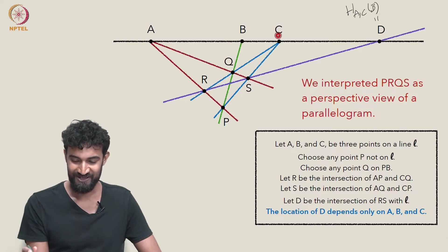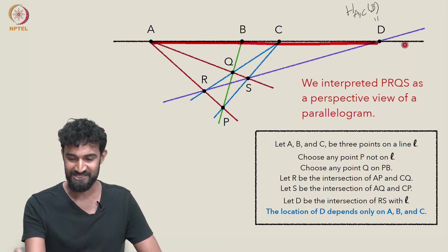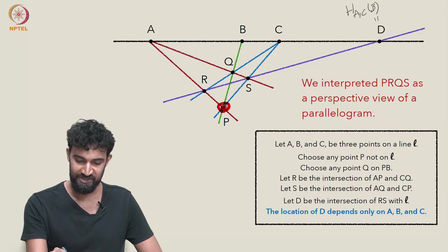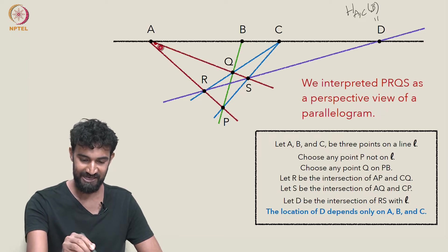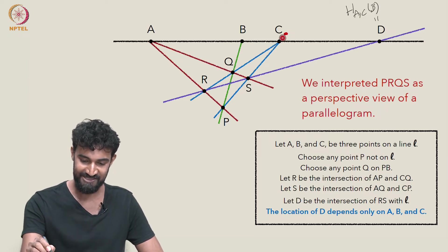And the way we defined it was given A, B, C, and D, we chose a point P in the plane, we chose a point Q on the line PB. We connected P and Q to A and to C.